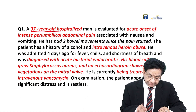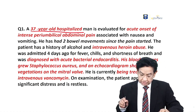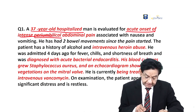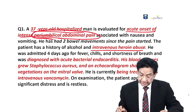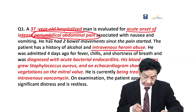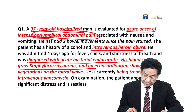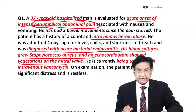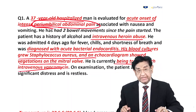We have a 37-year-old man hospitalized because of acute onset of intense peri-umbilical abdominal pain. He is a known case of intravenous heroin abuse and was diagnosed with acute bacterial endocarditis. His blood culture grew Staph aureus and echocardiogram showed vegetation of the mitral leaflet. He is being treated with intravenous vancomycin.